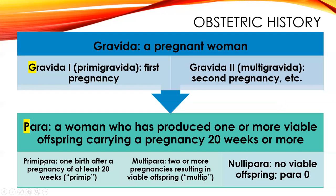Other terms: Primapara, abbreviated primip or primi, means she's had one birth — one birth after a pregnancy of at least 20 weeks. Multipara means someone who has had two or more pregnancies. Nullapara means someone who has had no pregnancies or no viable offspring. You'll hear these terms on your report sheet and need to become familiar with them.